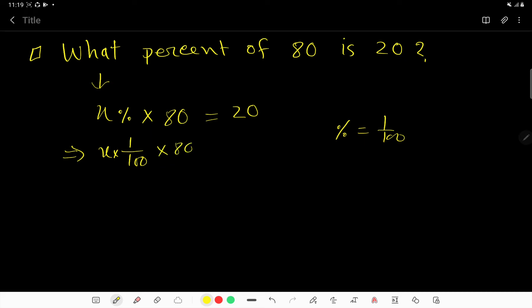then 80, 20. Cancel this 0, 0. So we are getting here, look, 8X divided by 10 = 20. So to cancel 10, let me multiply both sides by 10.